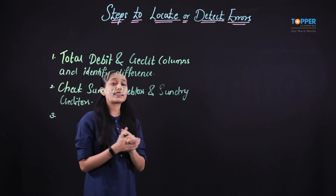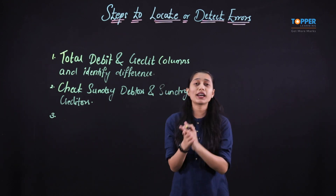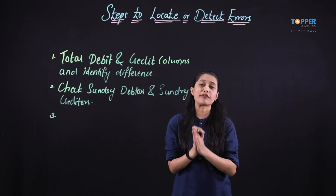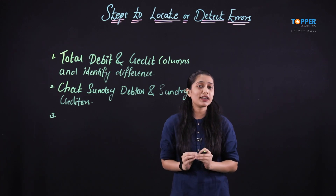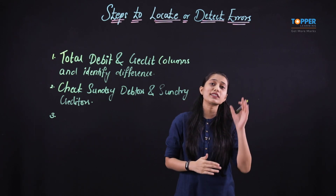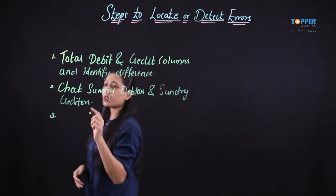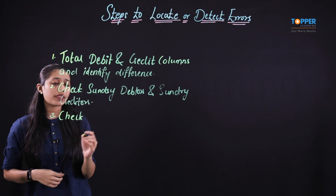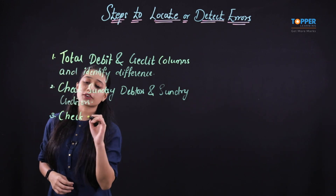Once the second step is done, we are supposed to check whether the correct balances are posted and recorded in the correct column of the trial balance. That means whether the debit balances have been shown in the debit column and whether the credit balances are shown in the credit column. So that becomes the third important step: to check whether the correct balances are recorded in the correct column.